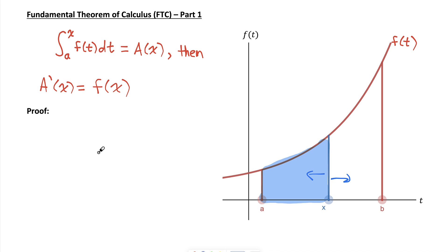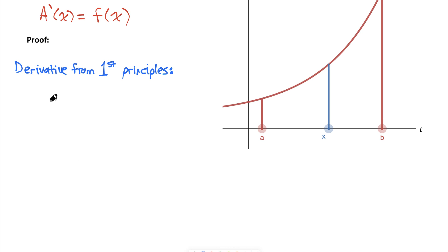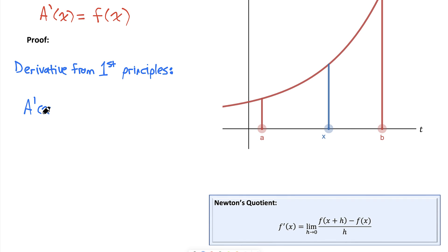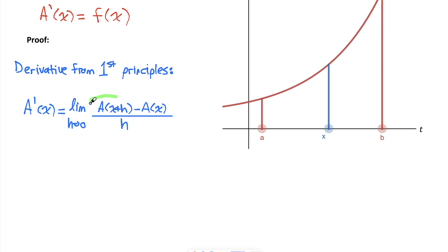Let me show you a proof of why we're allowed to do this. Let's start by rewriting A prime of x using our derivative from first principles rule. The derivative from first principles tells us that A prime of x is equal to the limit as h goes to zero of A at x plus h minus A at x, all over h. Now let's interpret what the area at x plus h is, what the area at x is, and more importantly, what the difference of those two areas represents.